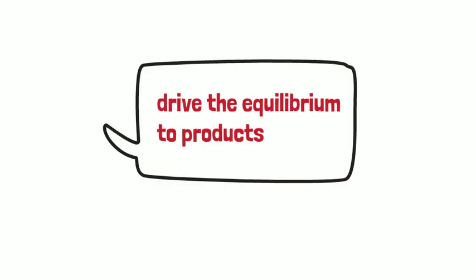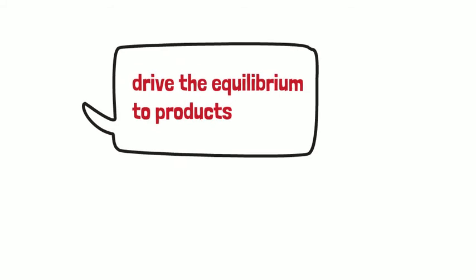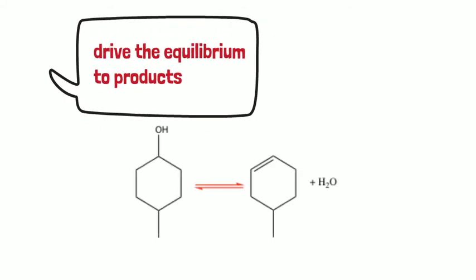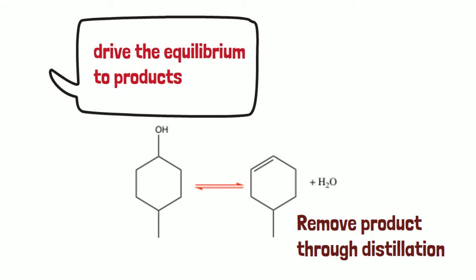Another advantage of distillation is to move the equilibrium to the product. For example, the synthesis of methylcyclohexene from methylcyclohexanol is an equilibrium reaction. According to Le Chatelier's principle, one way to drive the equilibrium towards product is to remove the product as it is being formed. This can be achieved through distillation where methylcyclohexene is removed as it is being formed to drive the equilibrium towards product.